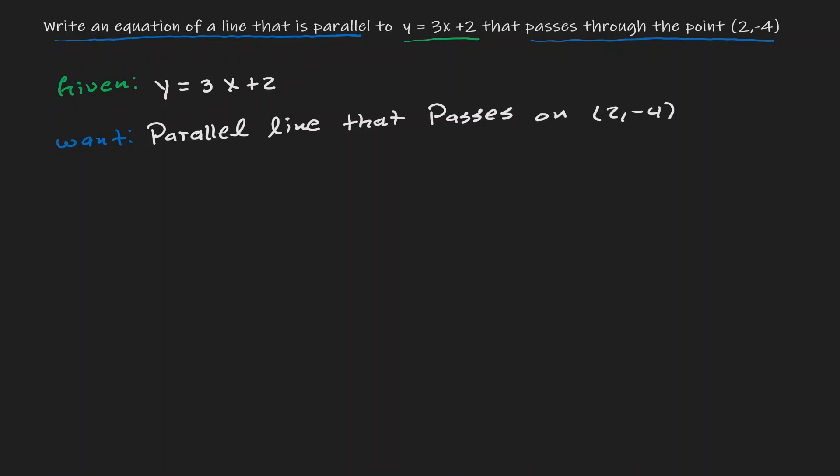If the line that we want needs to be parallel, we know that it needs to have the same slope as the line that we are given. So now we have everything that we need to create this parallel line, because we have the slope of this new line, which we know has to be 3. And in addition, we have a coordinate point. So we can think about one of the forms that we have to create a line.